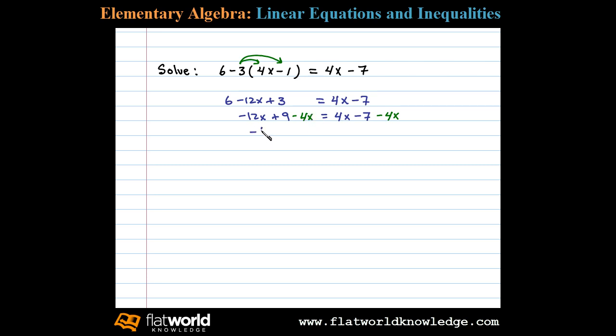over here on the left side, leaving us with negative 16x plus 9 equals - 4x minus 4x adds to 0, leaving negative 7 on the right side. Now we see the constant term here: 9.